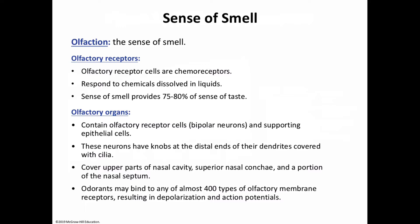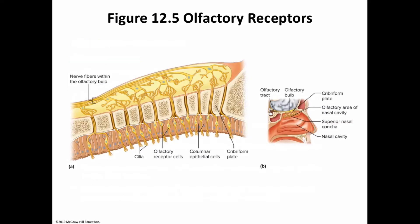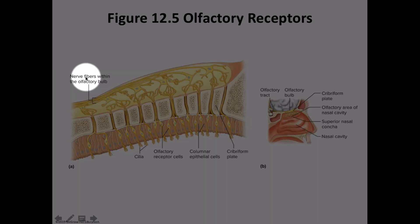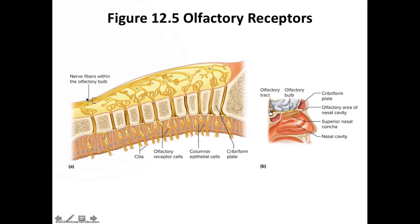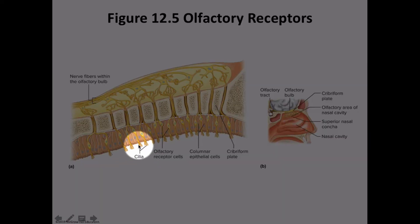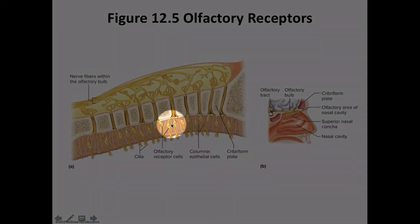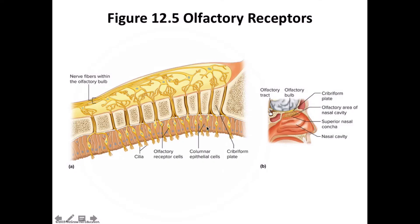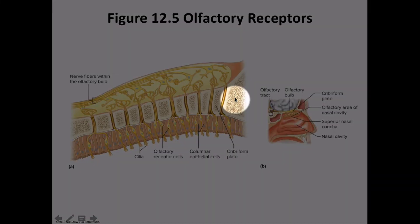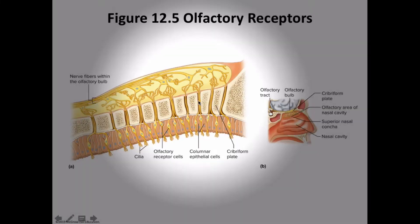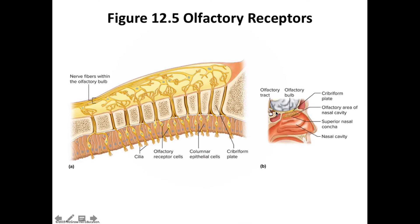Moving to olfactory pathways — refer to figure 12.5 in your textbook. This figure shows the nerve fibers within the olfactory bulb and the cilia, as well as the olfactory receptor cells (bipolar neurons) among the cilia and the cribriform plate. Figure 12.5B shows the olfactory area associated with the superior nasal concha.